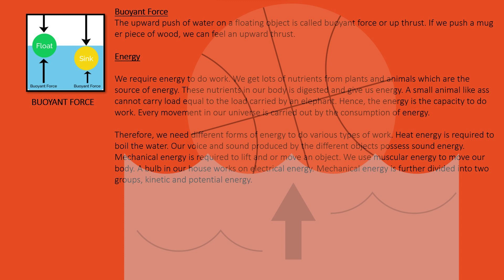Therefore, we need different forms of energy to do various types of work. Heat energy is required to boil the water. Our voice and sound produced by different objects possess sound energy. Mechanical energy is required to lift and or move an object. We use muscular energy to move our body. A bulb in our house works on electrical energy. Mechanical energy is further divided into two groups: kinetic and potential energy.